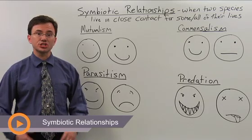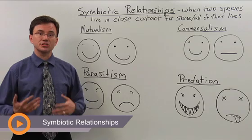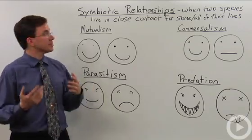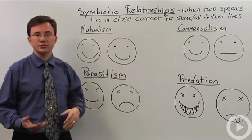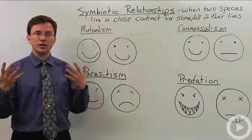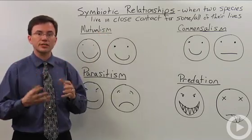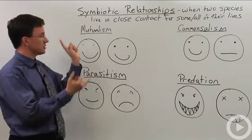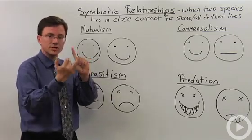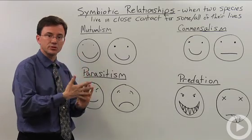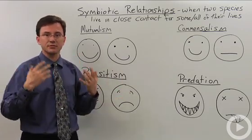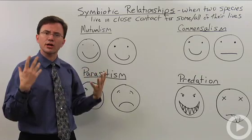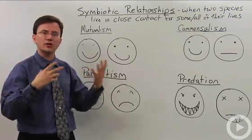One of the standard relationships that ecologists study between two species in a community is called a symbiotic relationship. Symbiotic relationships are when you have two organisms that live in close contact some or all of their lives. Stereotypically this includes mutualism and commensalism, though some people also include parasitism, and some tests or textbooks even include predation. I'll describe all of them so you can see how they interrelate.